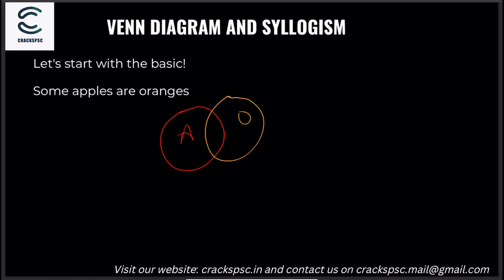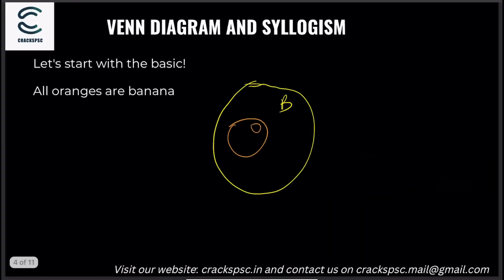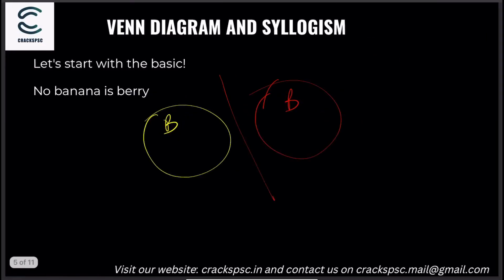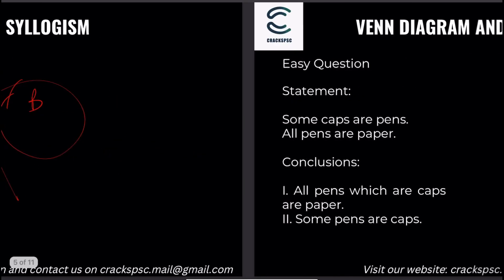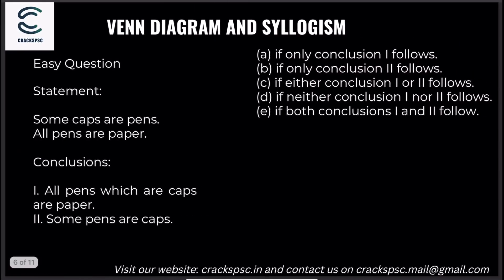The answer forms are: all something is something, some something is something, and no something is something. These are the variations. Okay, let's start with a sample question.